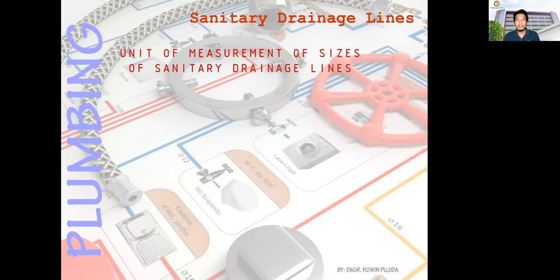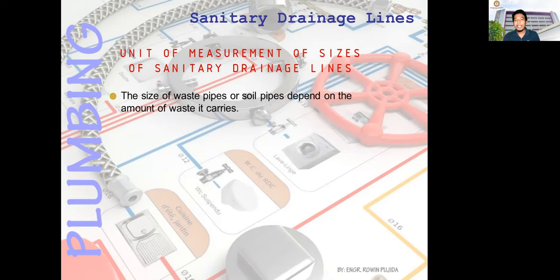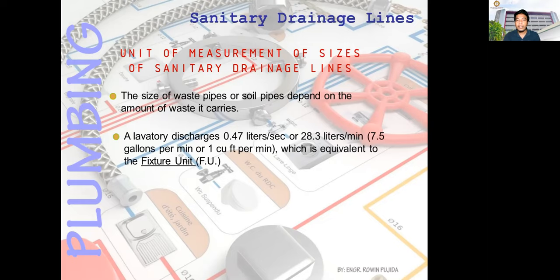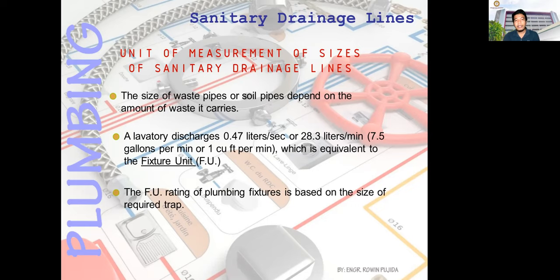The unit of measurement for sizes of sanitary drainage lines: the size of waste or soil pipes depends on the amount of waste carried — the number of occupants or number of toilets and bathrooms must be considered. A lavatory discharges 0.47 liters per second or 28.3 liters per minute, which is equivalent to one fixture unit. The fixture unit rating of plumbing fixtures is based on the size of the required trap — normally for a lavatory, a P-trap two inches in diameter is used.